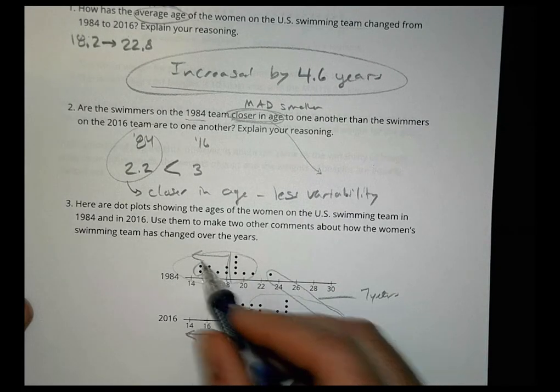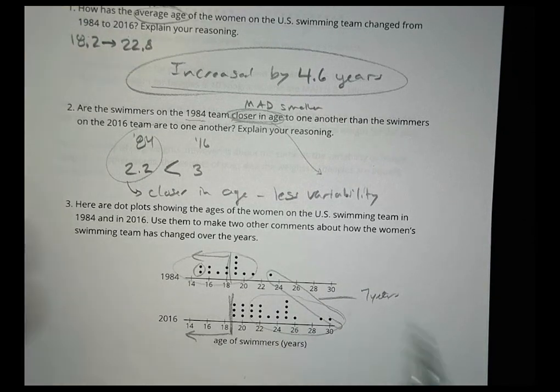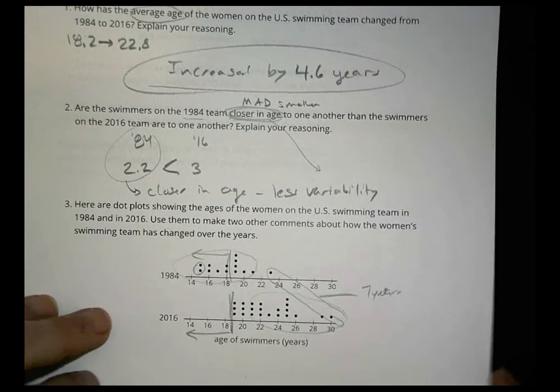The youngest swimmers in 1984 were 15; now the youngest is 19 — a difference of 4 years. There are a variety of things you could say based upon those charts.